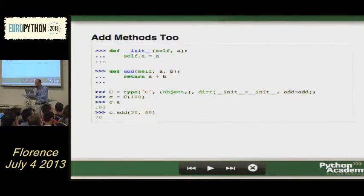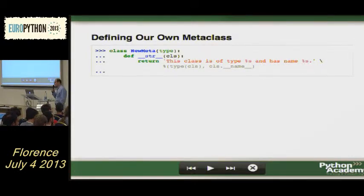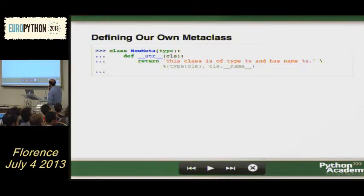This is important because if you use type you can actually write your own metaclass. You always use a metaclass but you want to write your own. It's pretty easy — because as I said, metaclasses are to classes what classes are to instances. So instead of inheriting from object, you inherit from type. And once you do this, you've got a new metaclass.